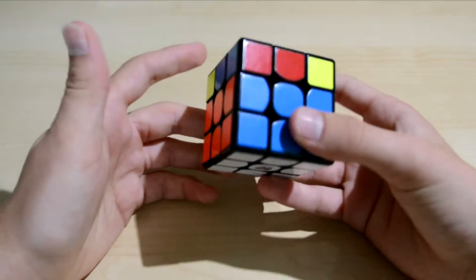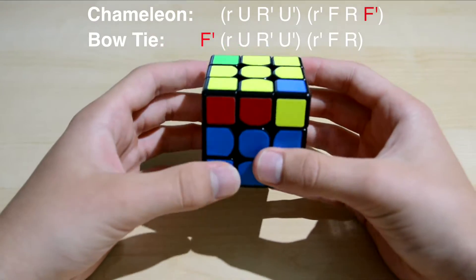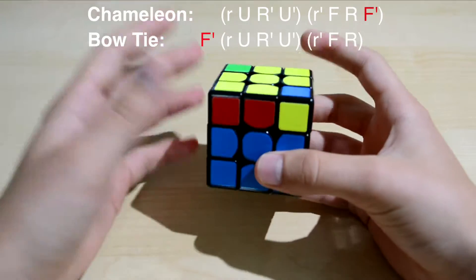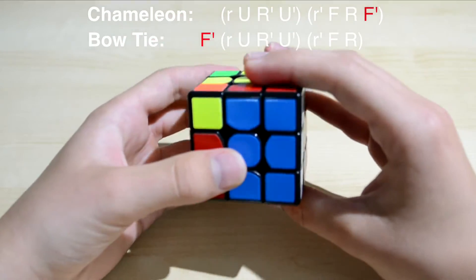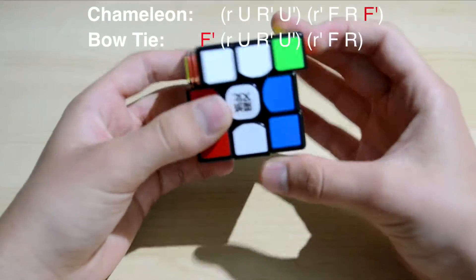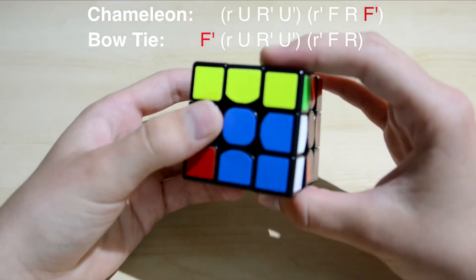This algorithm is exactly like the one of the chameleon but the F' at the end is just put in the front. So you start with the F' with which you end at the chameleon, then you do the fat sexy move and then you end with an R' F R.